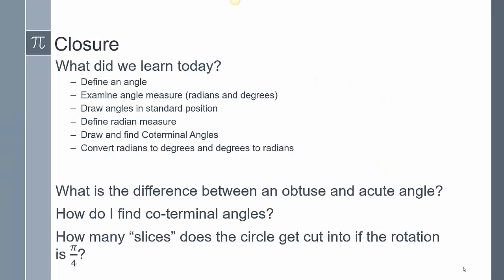To close today's lesson: we defined an angle, examined angle measure in both radians and degrees, drew angles in standard position, defined radian measure, and drew and found coterminal angles. Now a question for you: what is the difference between an obtuse and an acute angle? How do I find coterminal angles in both radians and degrees? And how many slices does the circle get cut into if the rotation is π/4?